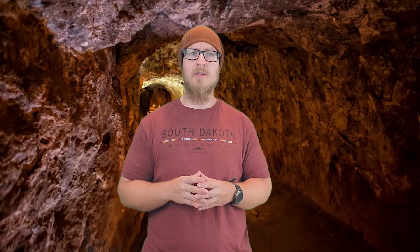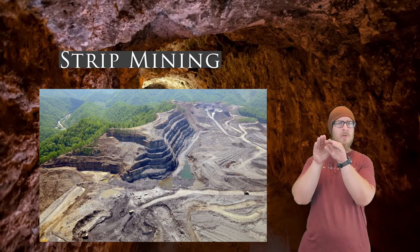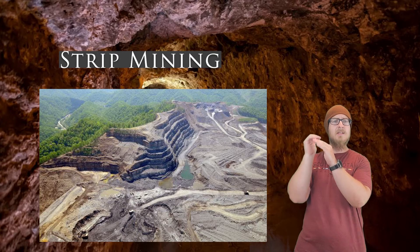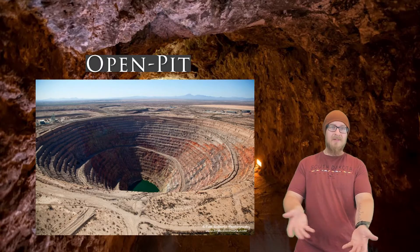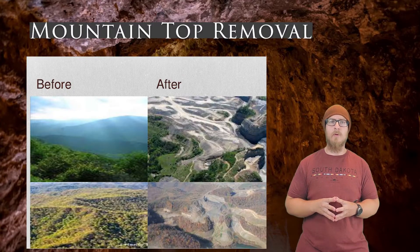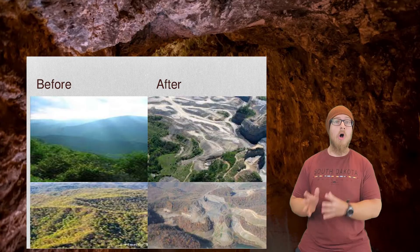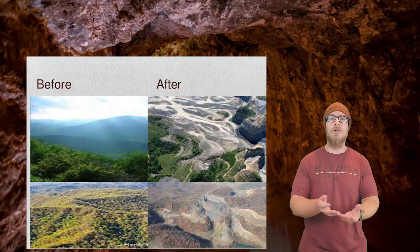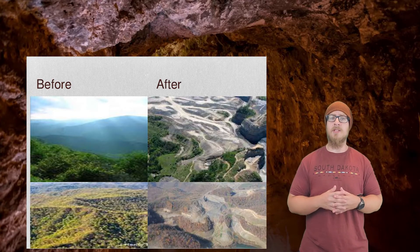Surface mining is the removal of large portions of soil and rock from the surface, and there are a few ways we do this. Strip mining is when an area is cleared of vegetation and soil and ore is removed in subsequent strips, and it ends up looking a little bit like steps. Open pit mining is the removal of material from an open pit. Mountaintop removal is a type of mining where explosives are used to remove the tops of mountains for ore extraction. All types of surface mining result in the destruction of habitat and the removal of vegetation, which contributes to erosion, species loss, and the increased risk of flooding.